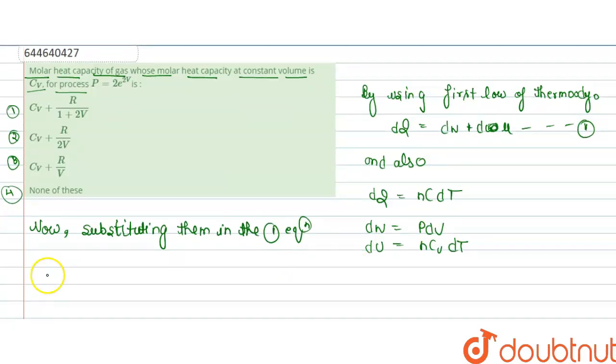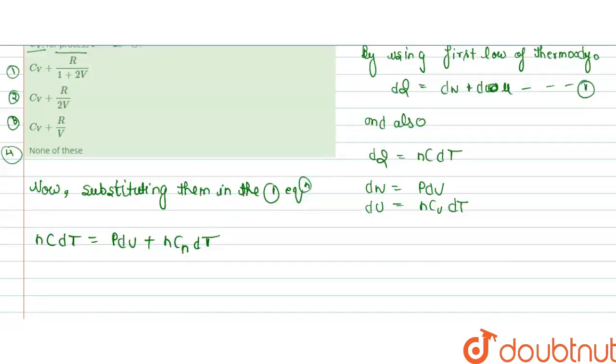So we put these values and we get nC dT equals P dV plus nCv dT. Therefore, C equals P dV divided by n dT plus Cv.